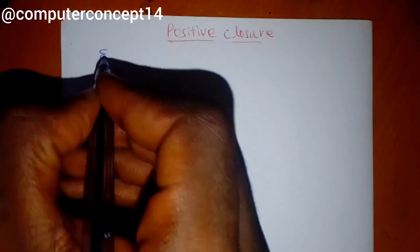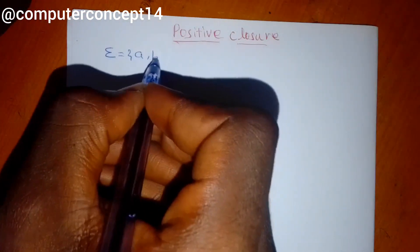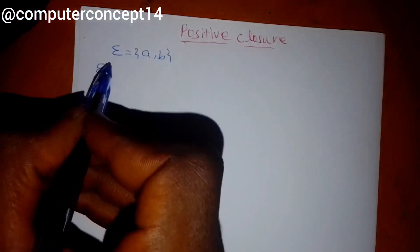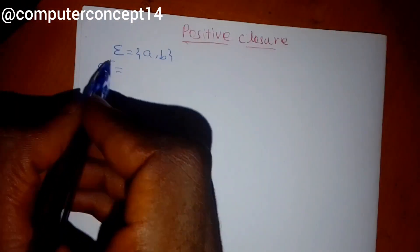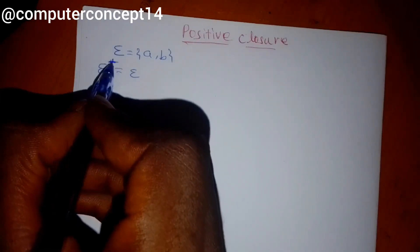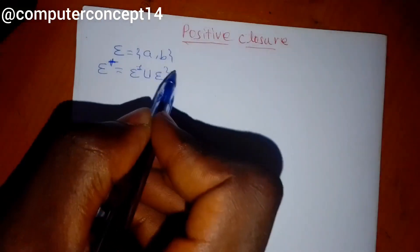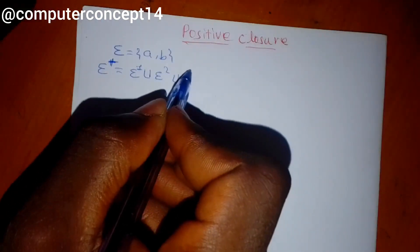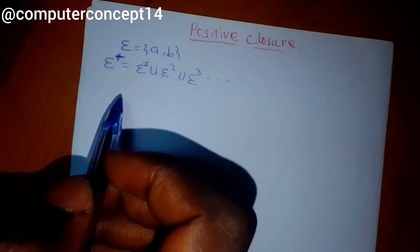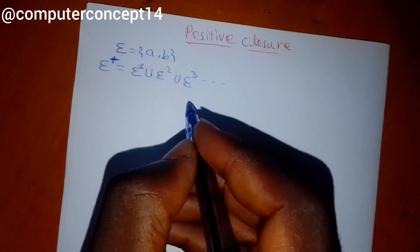sigma 1 is equal to a, b. So positive closure is equal to b. Positive closure is equal to b — so this is the application.